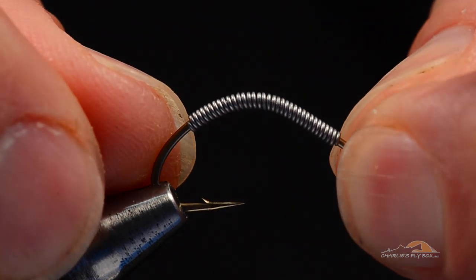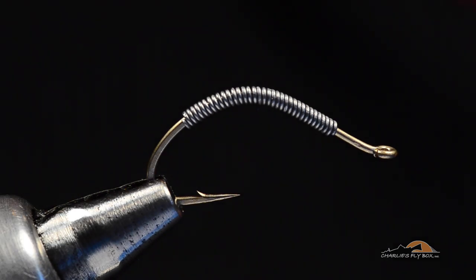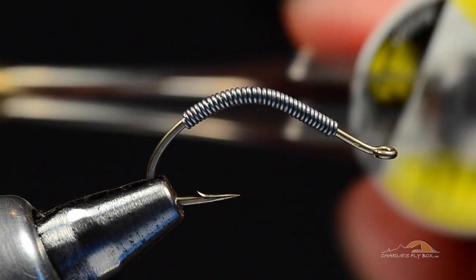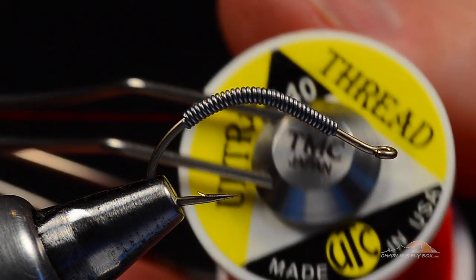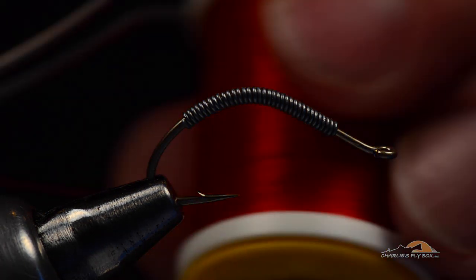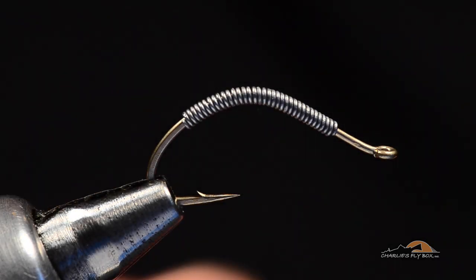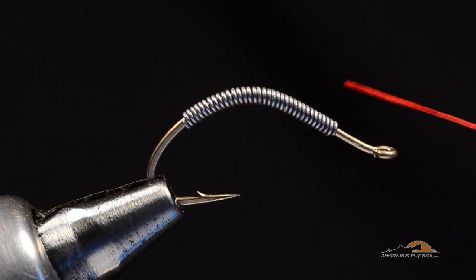So, you can see I've kind of pushed those lead wraps together as much as I can, and I'm going to start this thread. Maybe I'll tell you what it is. This is 140 denier UTC, and it's just red in this case. Red and orange are my two favorite colors. You can tie brown and pink ones too, but red and orange are my two favorites.